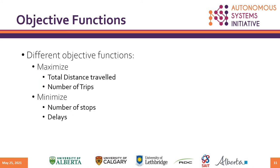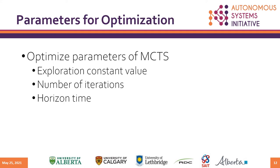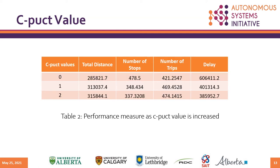The different objective functions we are exploring are maximizing total distance traveled and the number of trips, and minimizing the number of stops and the total delay. The MCTS parameters we are optimizing are the exploration constant, the number of iterations, and the simulation timeline. The current parameter we are optimizing is the exploration constant, and we can see from Table 2 that increasing the exploration constant yields better results. We are yet to find the highest value for this constant.